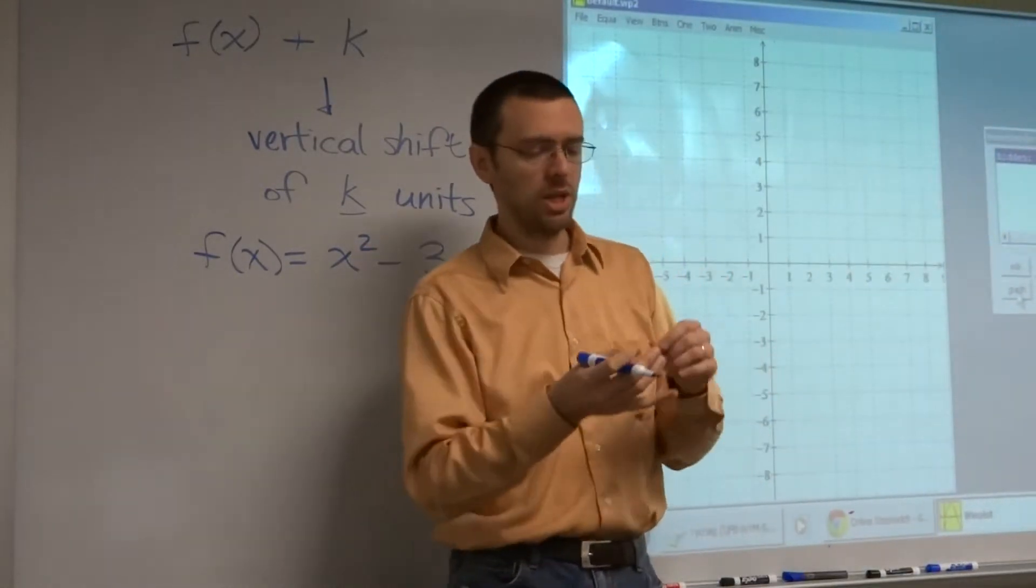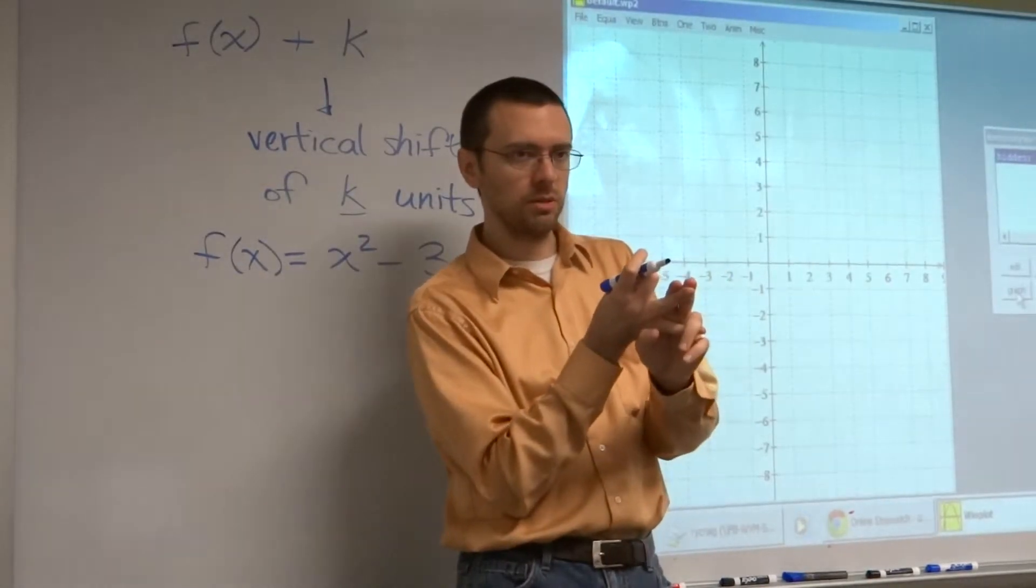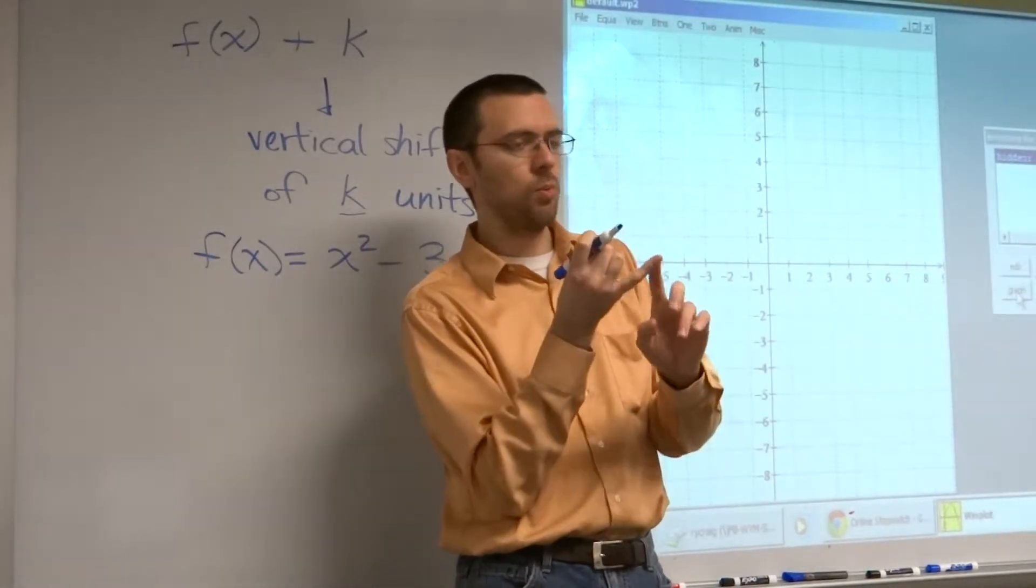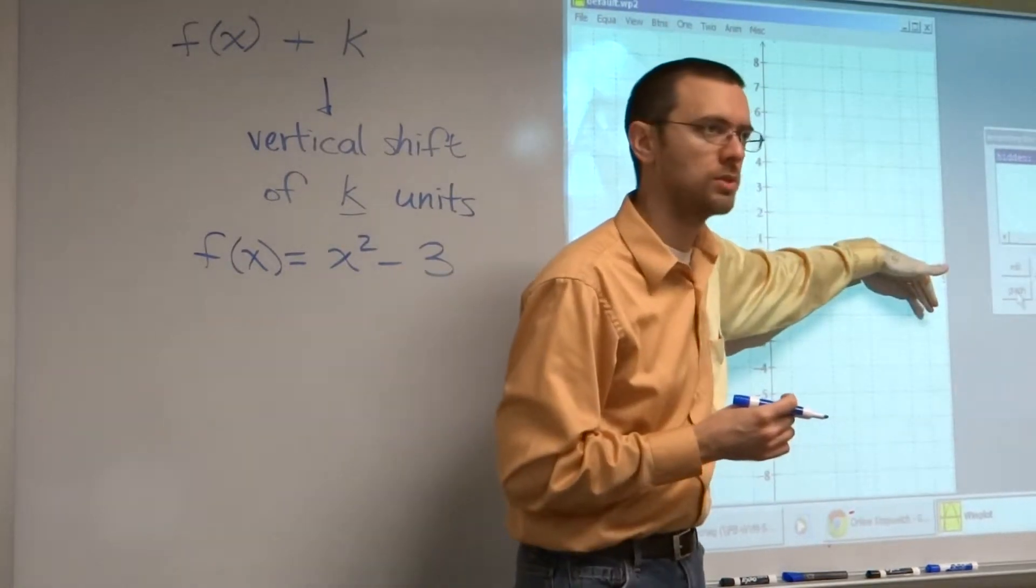Before, when we were graphing lines, a lot of times you would tell me, what's the slope and what's the y-intercept, right? And you know that with the y-intercept, that locates it on the graph, and then the slope gives you the rest of the points, right?